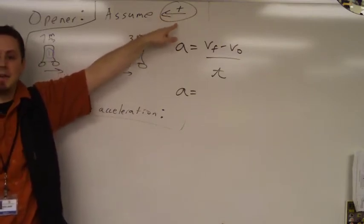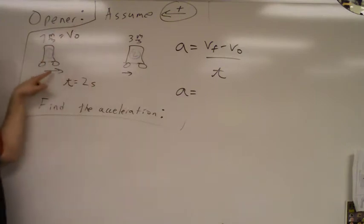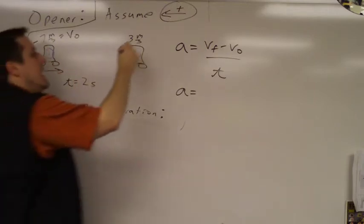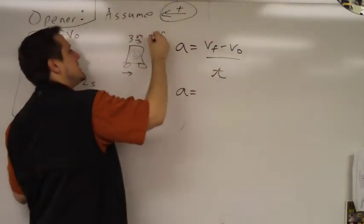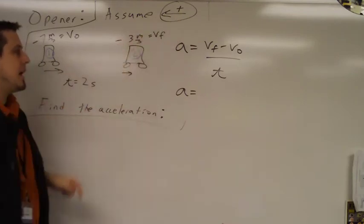I said left was positive. So this is the initial velocity, but since it's going to the right, what sign do I have to put on it? A negative. And this is the final velocity, but since it's going to the right, I have to put on a negative.